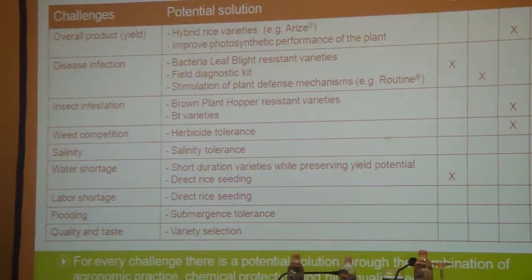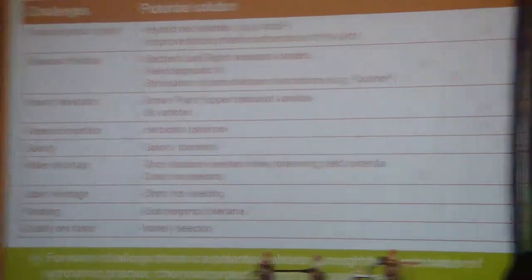For weed control: herbicide tolerance. For salinity: salinity tolerance. For water shortage, not only are we working on short-duration hybrid varieties to consume less water, but we are also trying to develop a new agronomic system — or further promote systems like direct-seeded rice. Labor shortage is also addressed through this system.